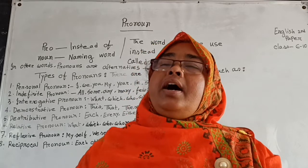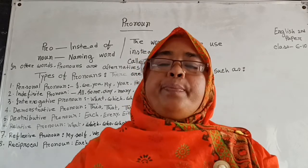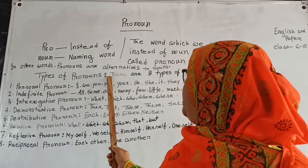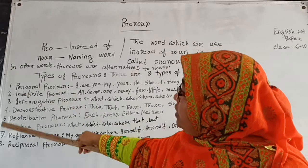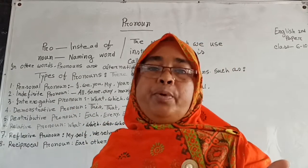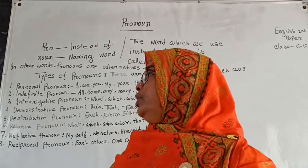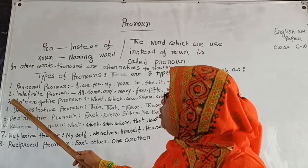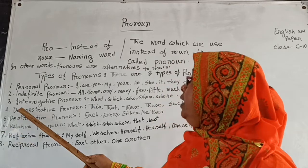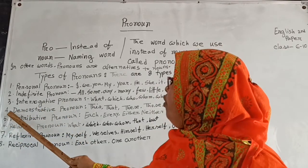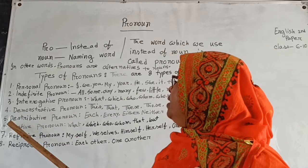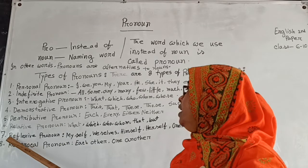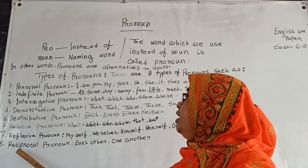There are eight types of pronouns. Number one: personal pronoun. Two: indefinite pronoun. Three: interrogative pronoun. Four: demonstrative pronoun. Five: distributive pronoun. Six: relative pronoun. Seven: reflexive pronoun. Eight: reciprocal pronoun.